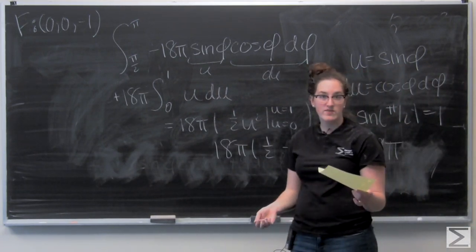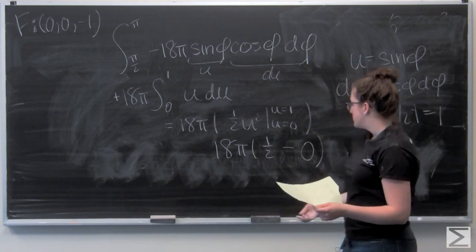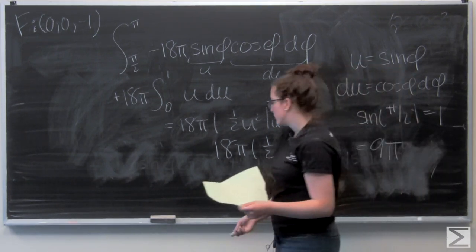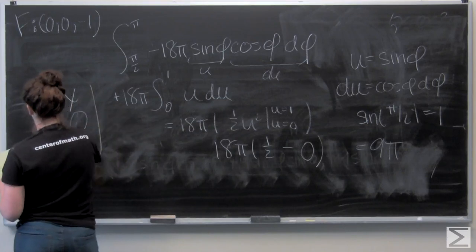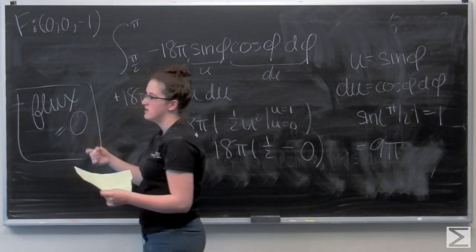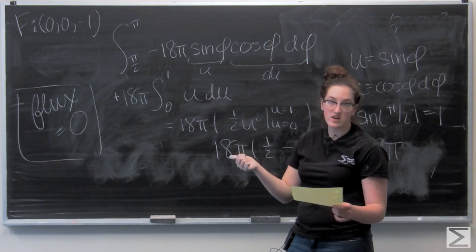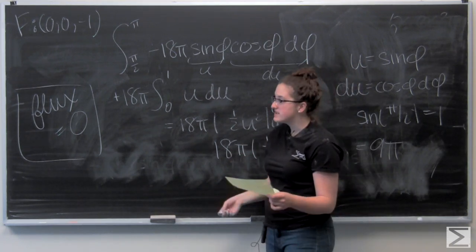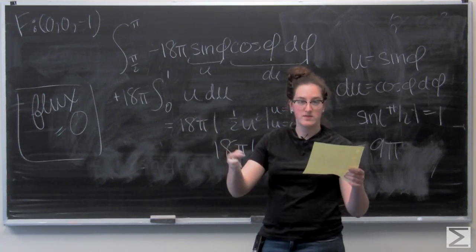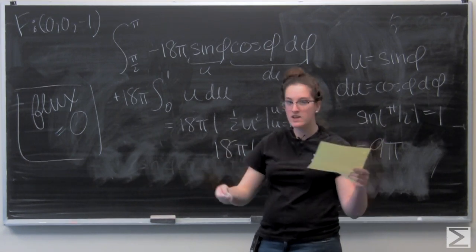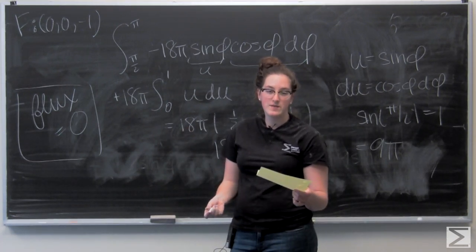Adding the two results: the flux through M is negative 9π from the disk plus 9π from the hemisphere, which equals zero. The second part of the question asks whether there is a source, sink, or neither inside M. Since the flux is zero, the answer is neither. If the flux were greater than zero it would be a source with things flowing out, and if negative it would be a sink. Since it's zero, there is neither a sink nor a source inside M.